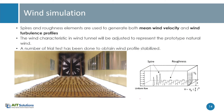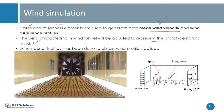For wind simulation in the wind tunnel, we use spires and roughness elements to generate both mean wind velocity and turbulence profiles. Wind speed increases with height, while turbulence is maximum near the surface and reduces as we go up. Both the velocity profile and turbulence profile must be simulated using roughness elements. Several trial tests are performed until the wind profile is stabilized and ready for the test model.